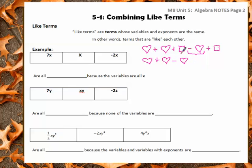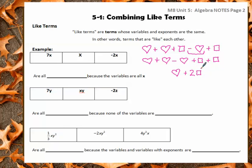Minus heart. Then I'm going to do my boxes: plus box, plus box. I can see that one heart plus another heart gives me two hearts. Minus a heart only gives me one heart. Then I have a box and another box, so that gives me two boxes. My final answer would be one heart and two boxes.